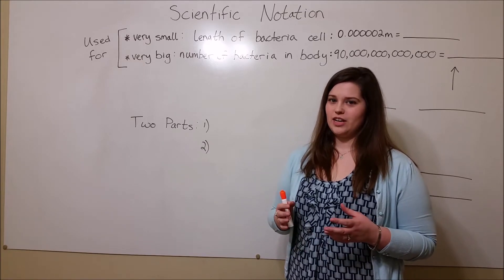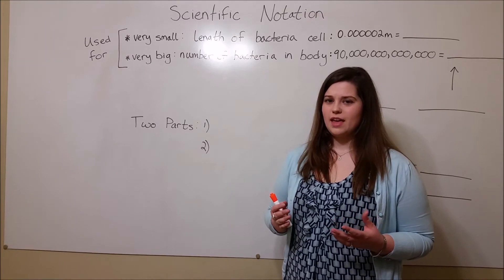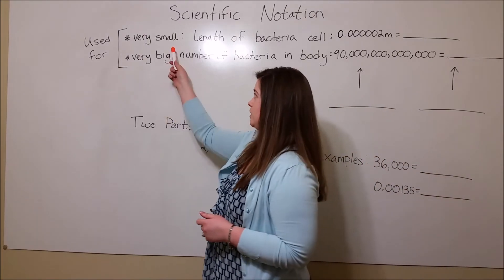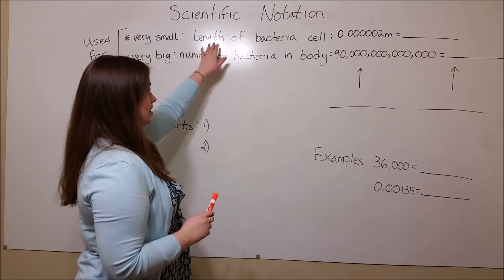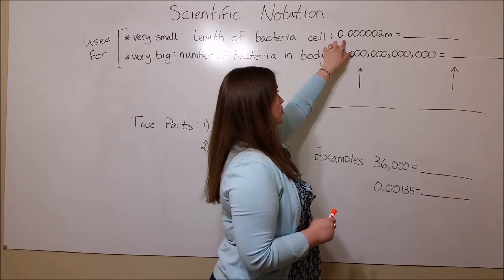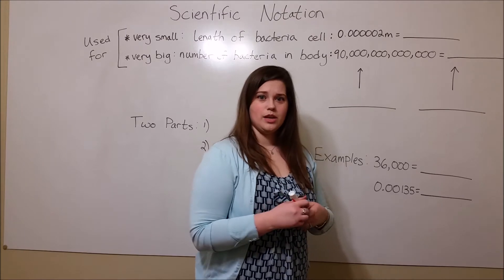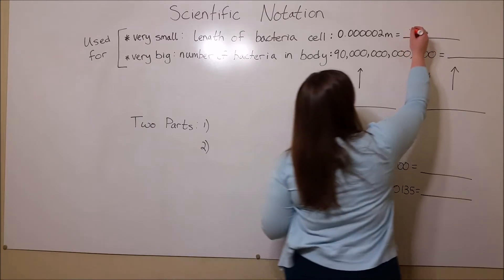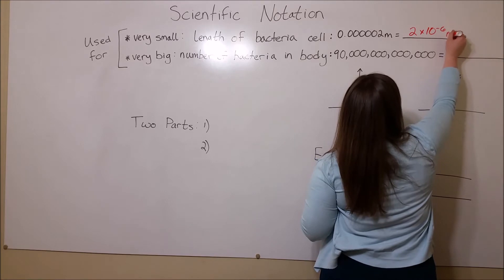Scientific notation is a style of writing numbers to make them more manageable. It's used particularly for numbers that are very small or very big. For example, the length of a bacteria cell is, on average, 0.0000002 meters. That's a lot of zeros, so it can be simplified by writing it in scientific notation. In this case, 2 times 10 to the negative 6 meters.